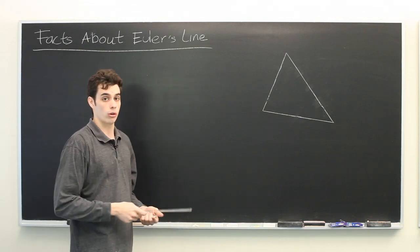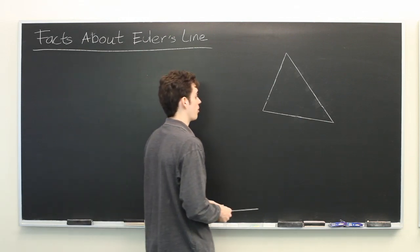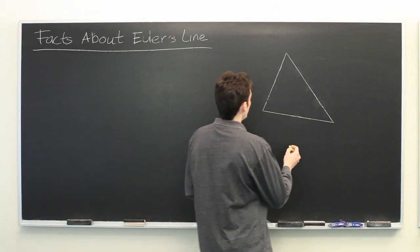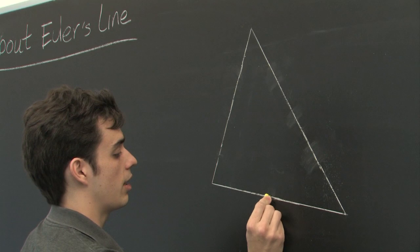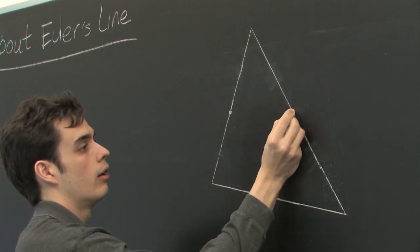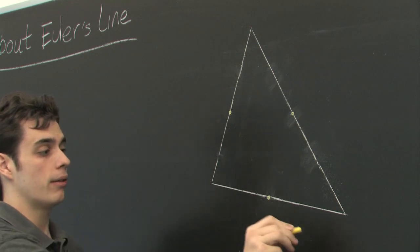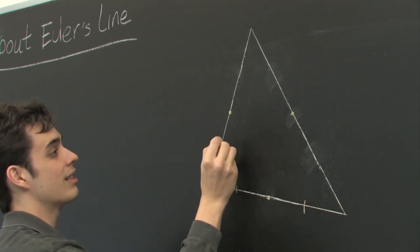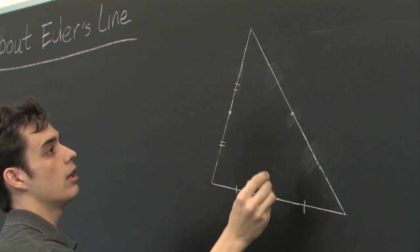Before we draw Euler's line, let's go ahead and construct some of those center points. One way of constructing a center is the centroid. First, we find the midpoint of each of the edges, the point that divides these line segments into equal chunks.